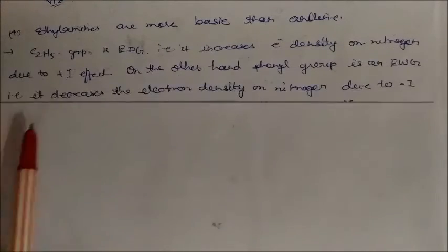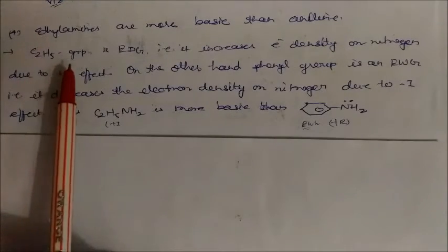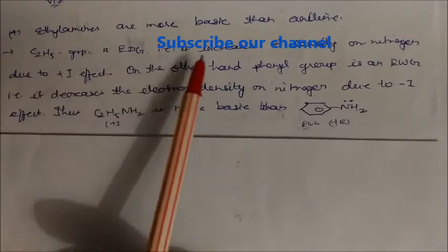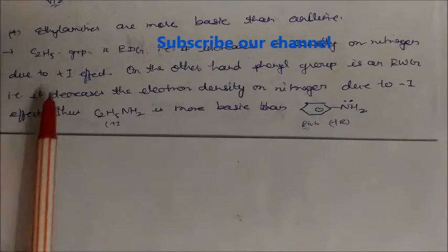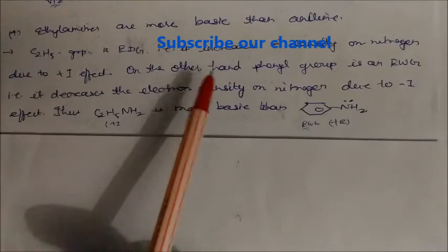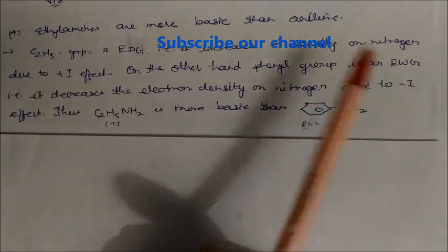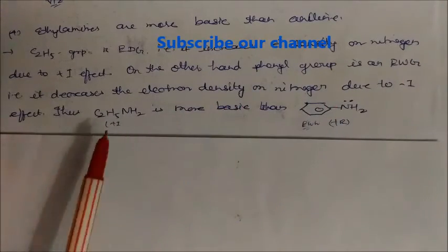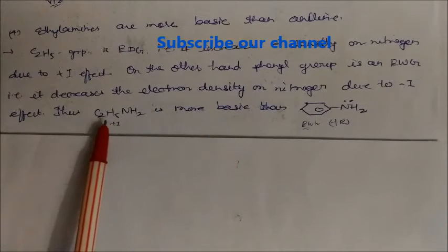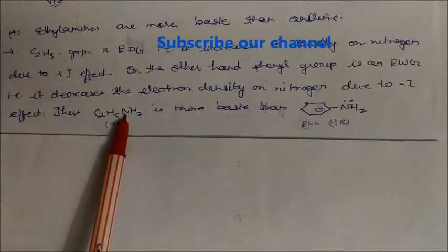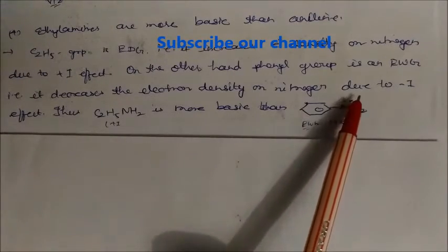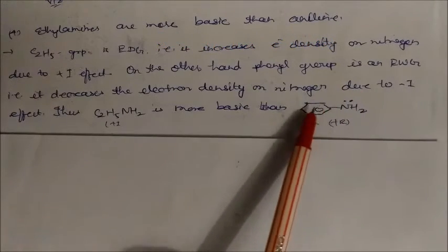Ethylamine is more basic than aniline. The C₂H₅ group of ethylamine is an electron-donating group, so it increases the electron density on nitrogen due to the +I effect. On the other hand, the phenyl group is an electron-withdrawing group, so it decreases the electron density on nitrogen due to the −I effect or +R effect.